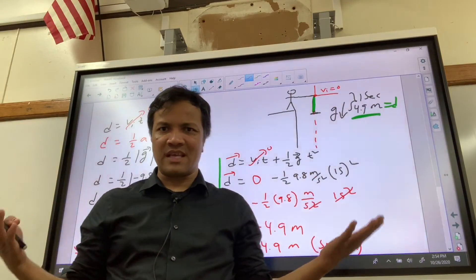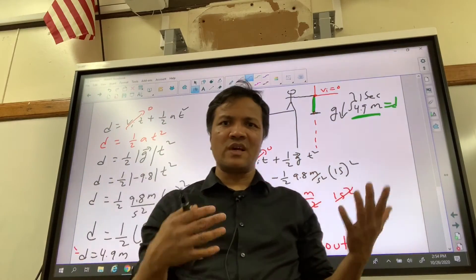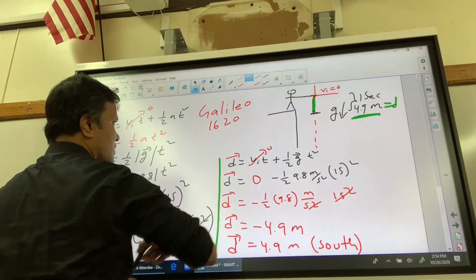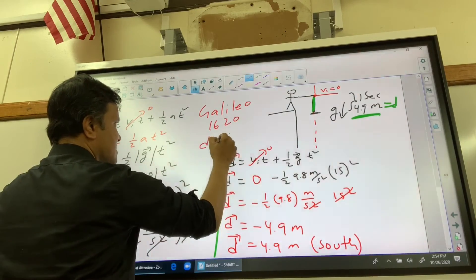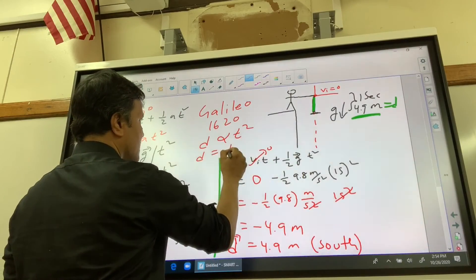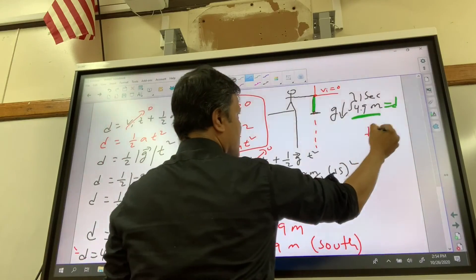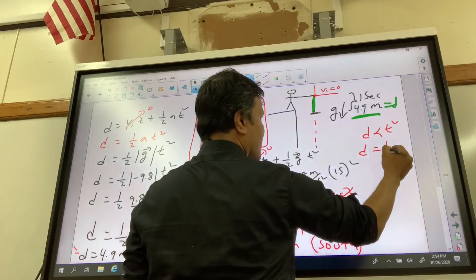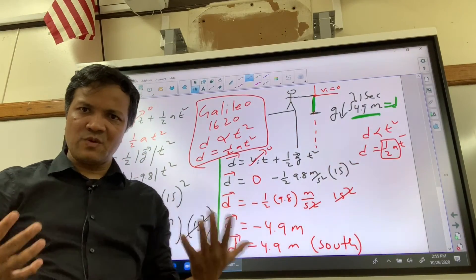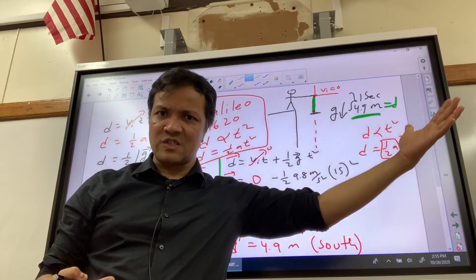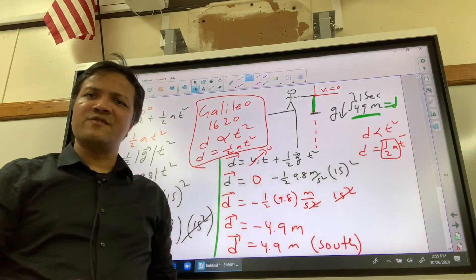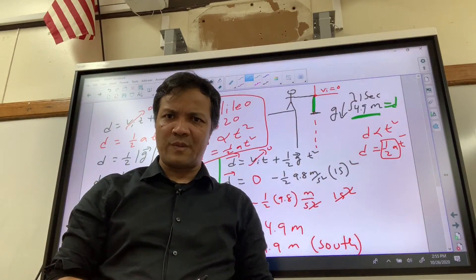What did we learn today? We learned how to derive one of the kinematics equations: d equals v-naught·t plus half·a·t squared. This came from Galileo around 1620. Galileo hypothesized that distance is proportional to the square of time, and deduced d equals half·a·t squared. Since a equals 9.8 m/s² is constant, distance equals half·a·t squared. I don't want you to memorize this — if you memorize it, you cannot go back to 1620 and read the mind of Galileo. Next time we'll prove another kinematics equation.